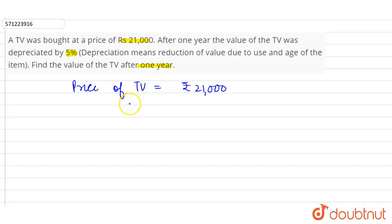We can take depreciation as a kind of loss. So depreciation percentage is given as 5%, and depreciation is calculated on the cost price. Depreciation value will be equal to 5% of the cost price.